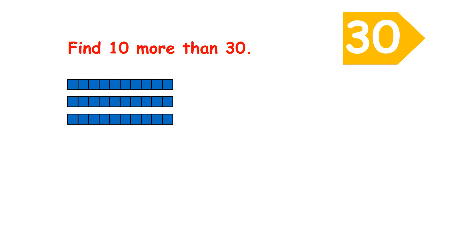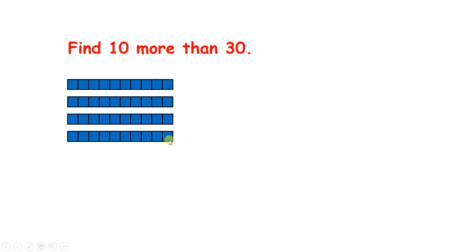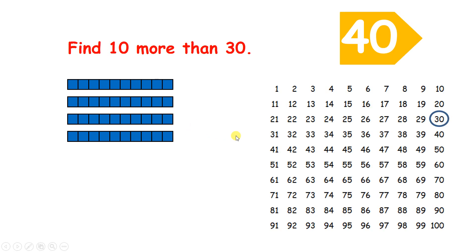Find 10 more than 30. So if we add 10 to 30, we have four 10s, or 40. And on a 100 square, to find 10 more, we move one place down.